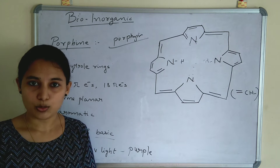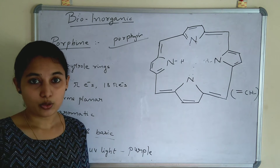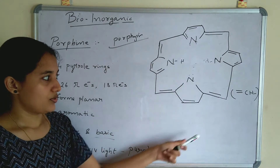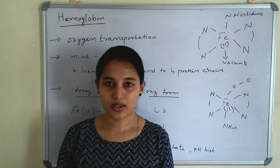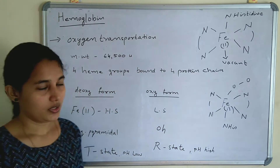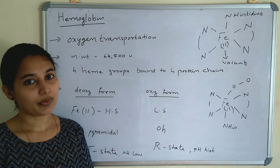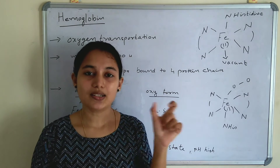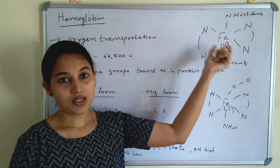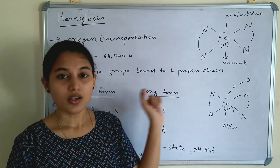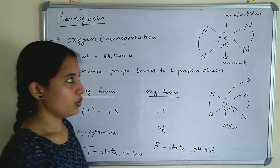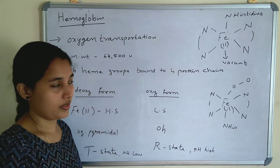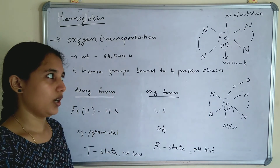Now we can see the structures of hemoglobin and myoglobin. For any bio-inorganic compound, we first need to understand the structure of porphine and the porphyrin ring. So you should be able to draw this porphine ring. I hope you understood the structure of the porphine ring. Now, in the structure of hemoglobin, the central metal atom is iron — Fe in the +2 oxidation state. This is the porphyrin ring, and in this porphyrin ring, iron is the central metal atom, and the four nitrogens are from the pyrrole rings.